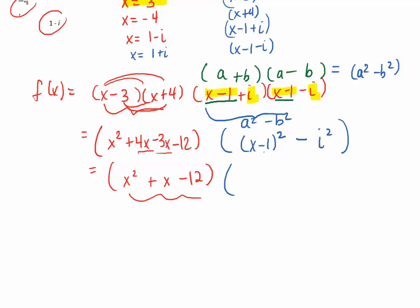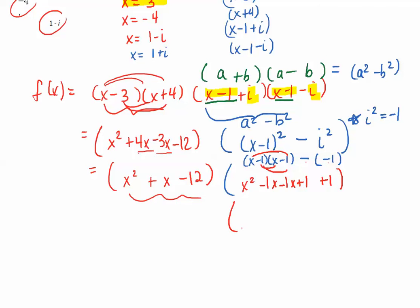To simplify this we have a problem within a problem. We expand x minus 1 squared as x minus 1 times x minus 1, and we remember that i squared is always negative 1, so this becomes minus negative 1. Foiling x minus 1 times x minus 1 gives x squared minus x minus x plus 1, then minus negative 1 becomes adding 1 at the end. So this simplifies to x squared minus 2x plus 2.